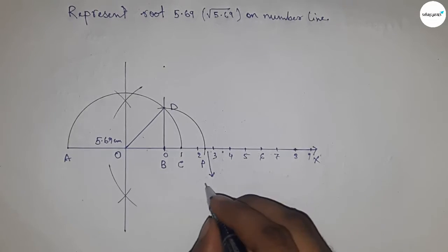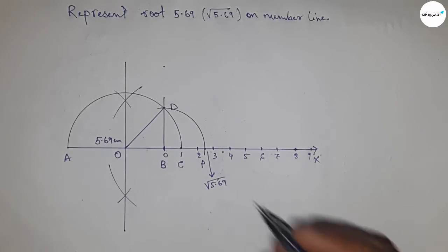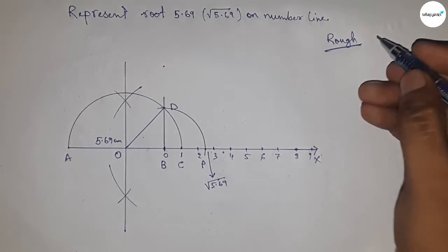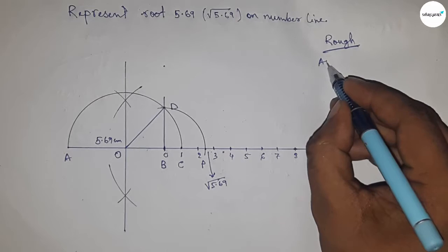And this is the representation of root 5.69 on number line. Now roughly discussing the calculation.